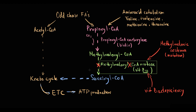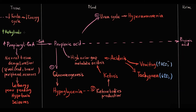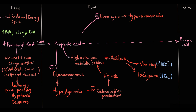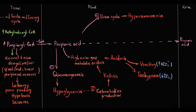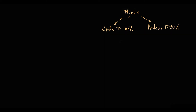If methylmalonyl-CoA mutase does not work, methylmalonyl-CoA and propionyl-CoA accumulate inside mitochondria and the cell. Because propionyl-CoA replaces acetyl-CoA in neural membranes, its accumulation causes demyelination. Methylmalonyl-CoA also causes demyelination — the myelin sheath has a high proportion of lipids and low proportion of proteins, unlike most biological membranes. As any membrane, myelin continuously wears out and requires ongoing repair.